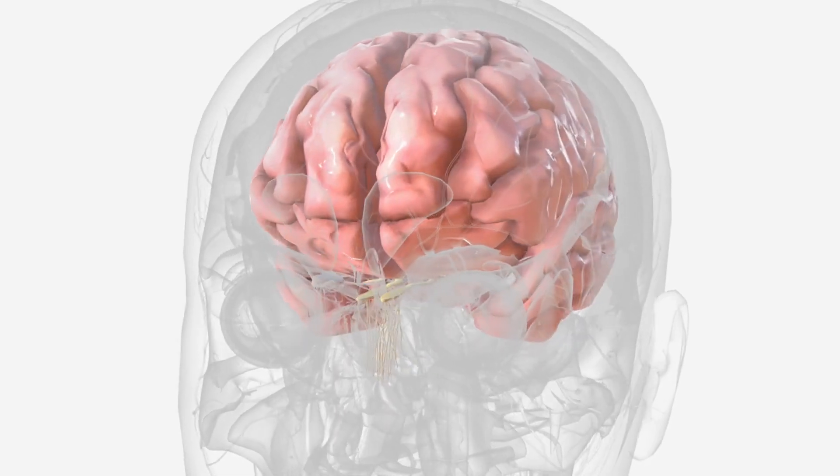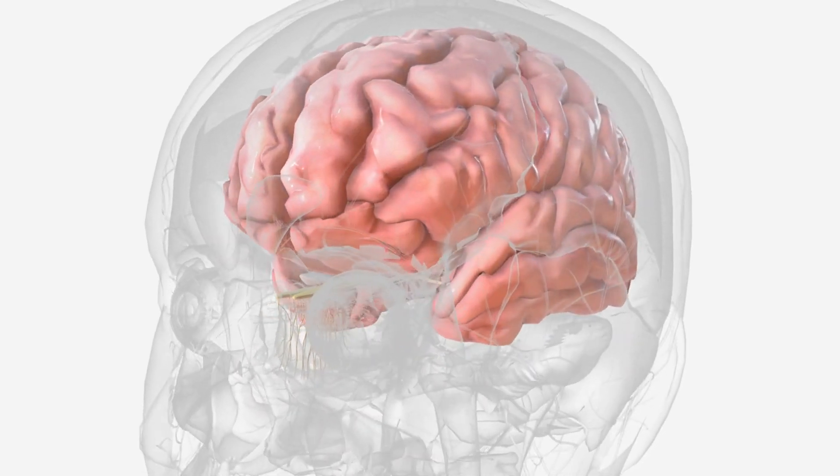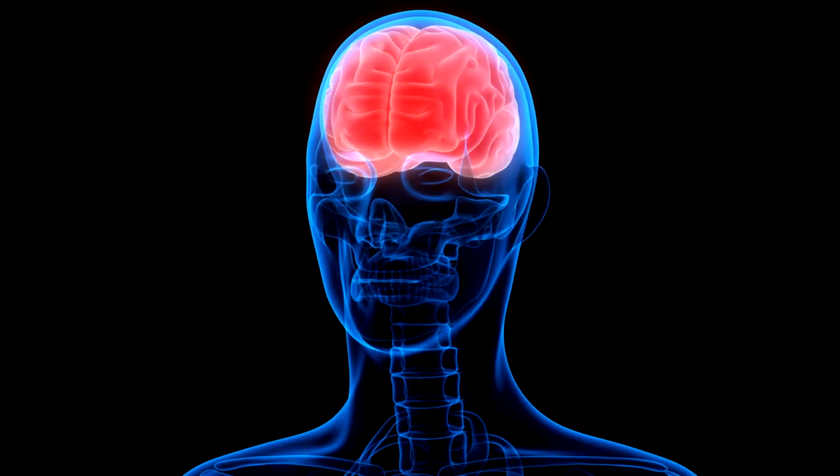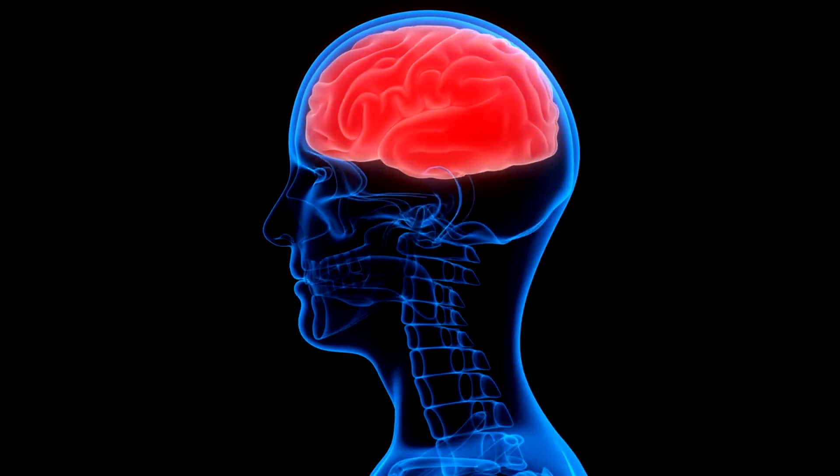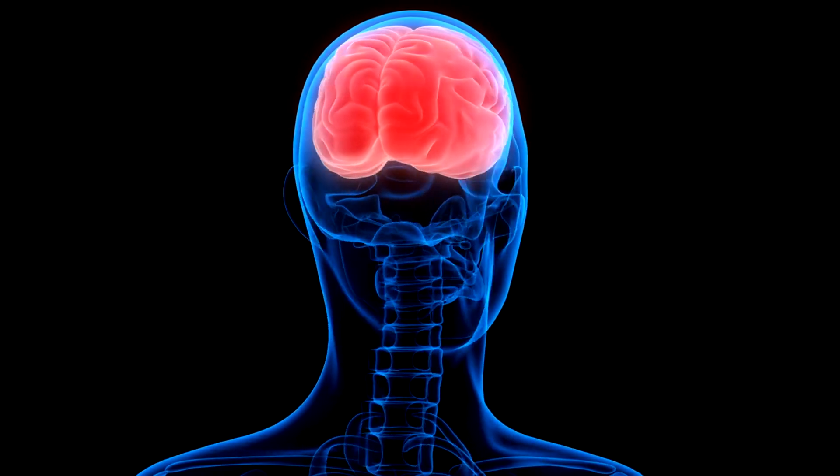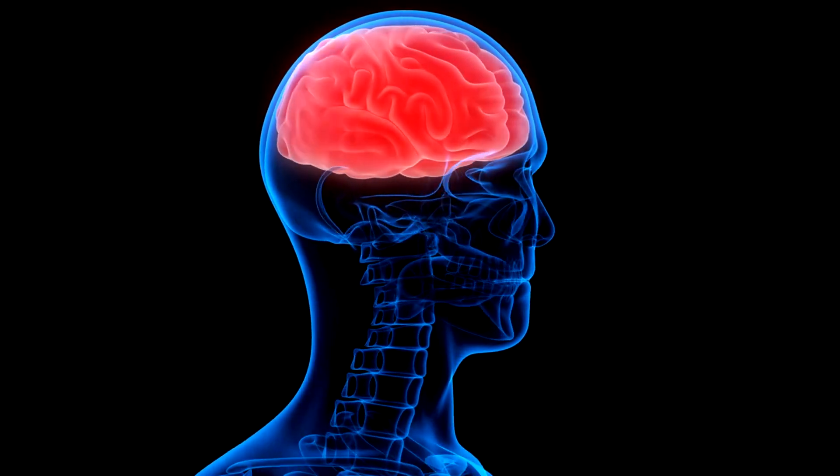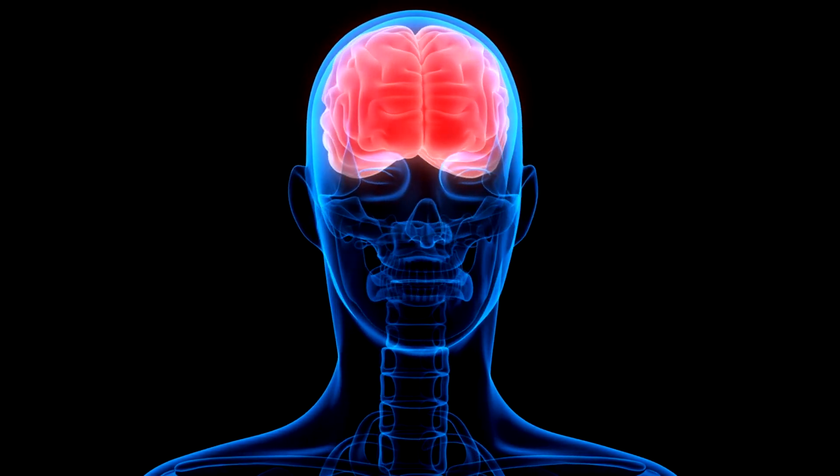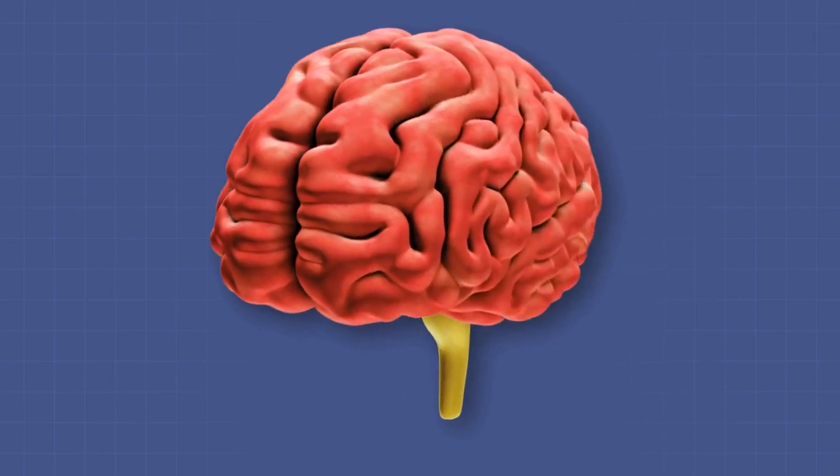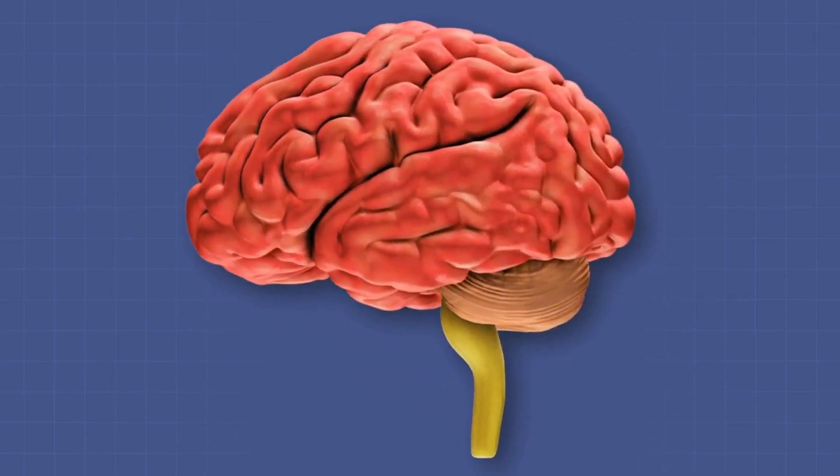The cerebrum is responsible for higher brain functions like thought and action. It's the largest part of the brain, divided into two hemispheres and further into four lobes: frontal, parietal, occipital, and temporal. Each lobe has distinct functions that contribute to our behavior and cognitive abilities.